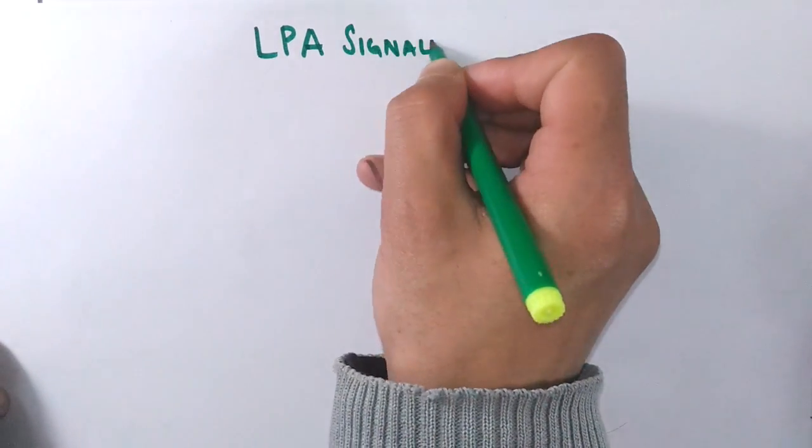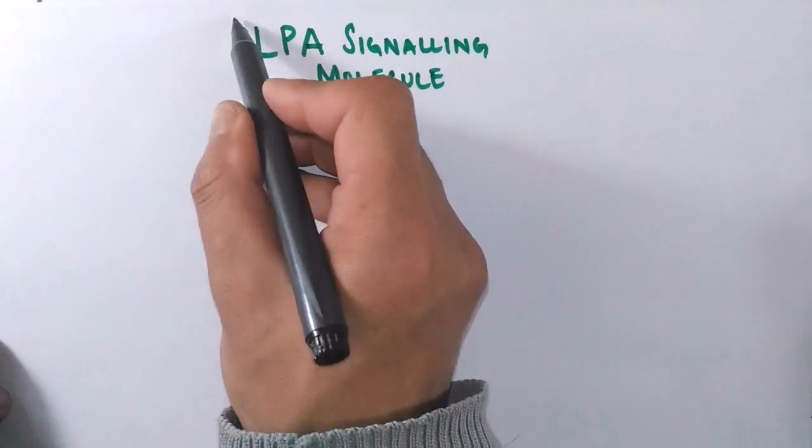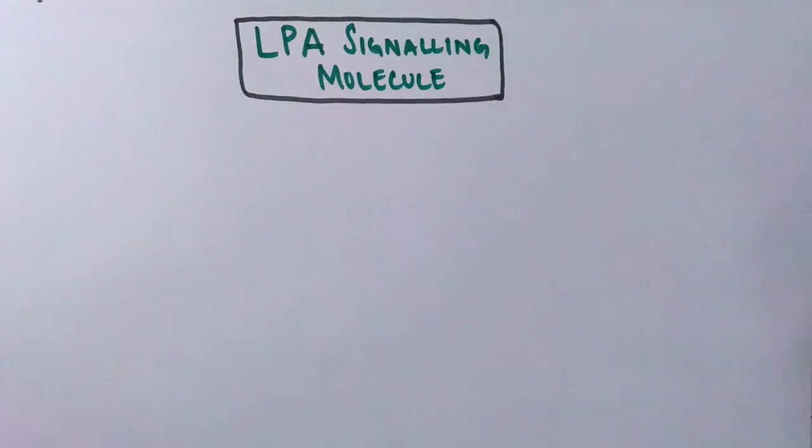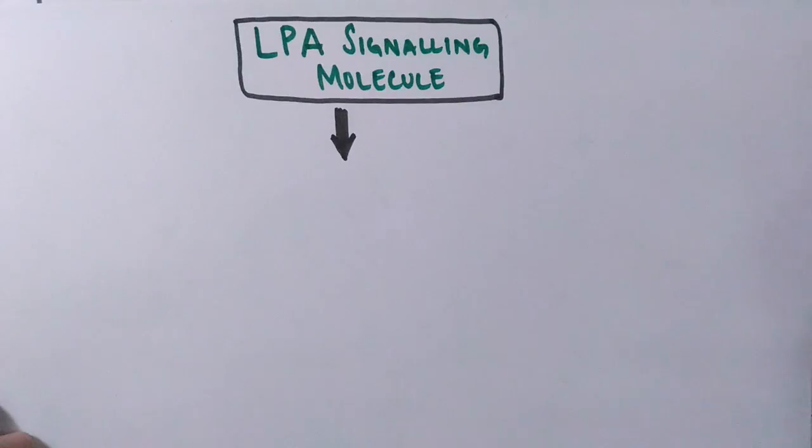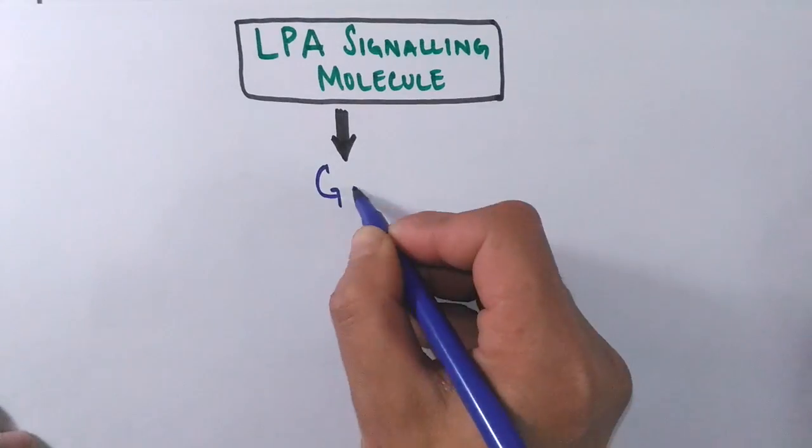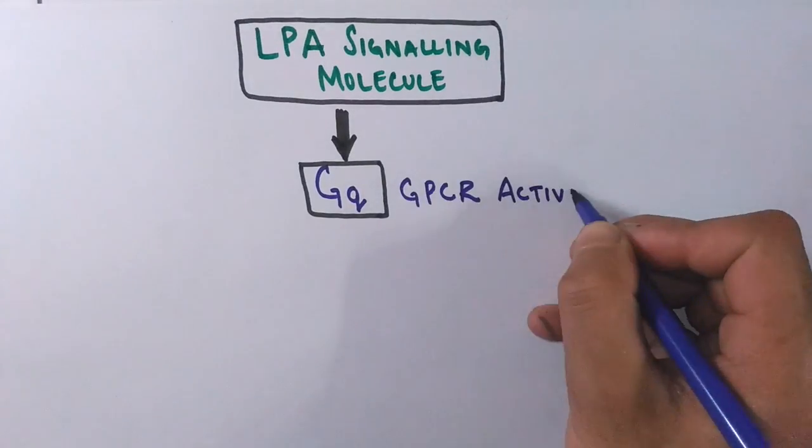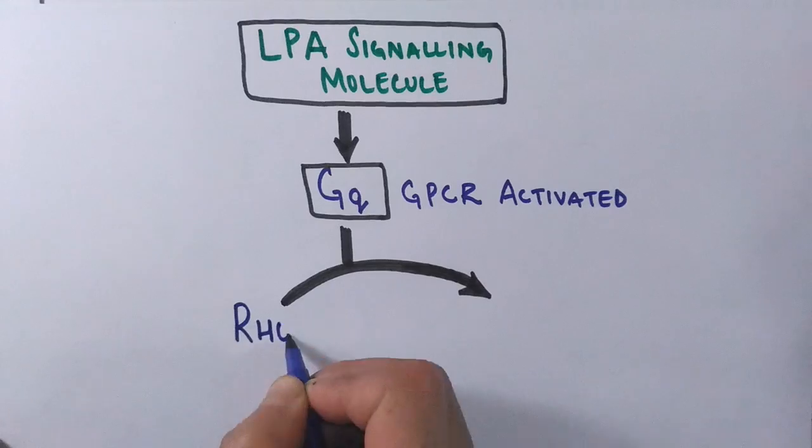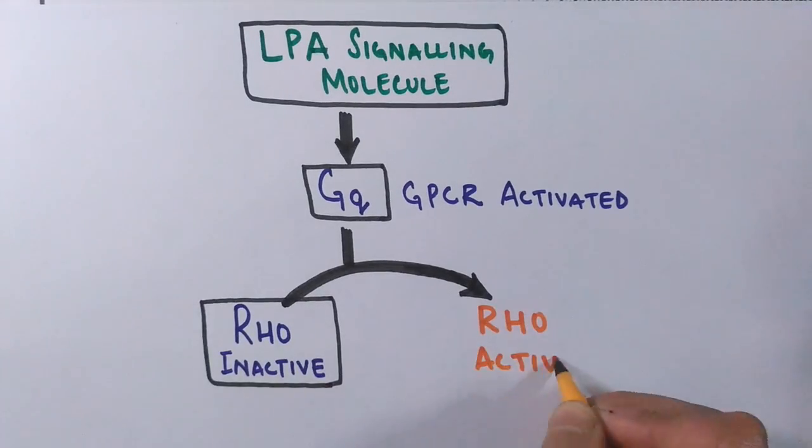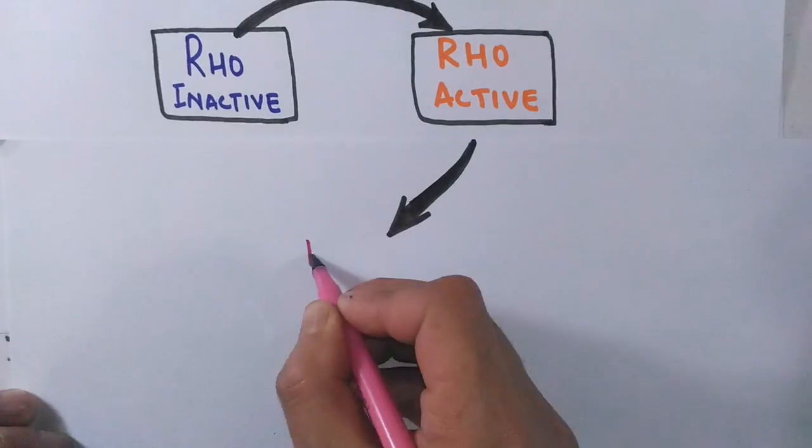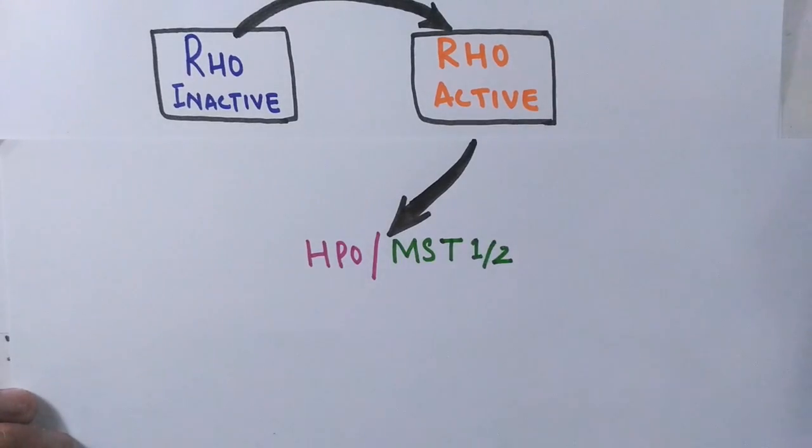Hippo signaling can initiate via contact inhibition, but here we will see how ligand binding initiates this cascade. LPA molecule, lysophosphatidic acid, can act as a ligand and activate G protein coupled receptors, which in turn activates Rho associated with GTPase. This Rho protein via actin modulation activates Hippo protein kinase finally.